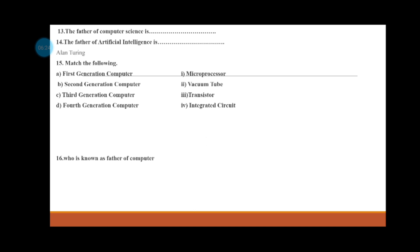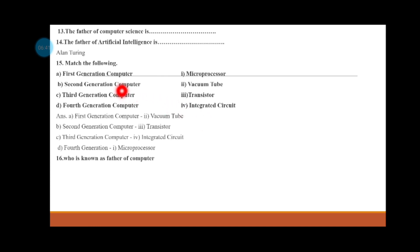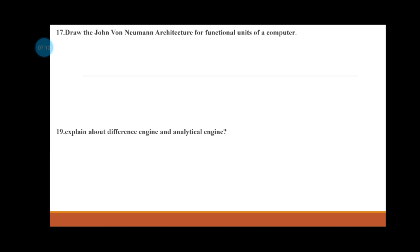Match the following: 1st Generation Computer, 2nd Generation, 3rd and 4th Technology. 1st Generation Computer used vacuum tubes, 2nd Generation Computer used transistors, and 3rd Generation Computer used integrated circuits.